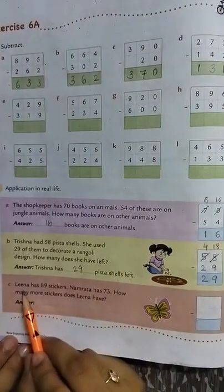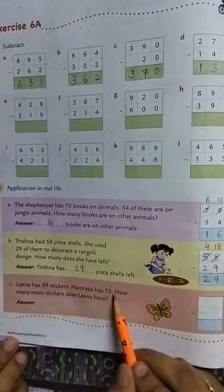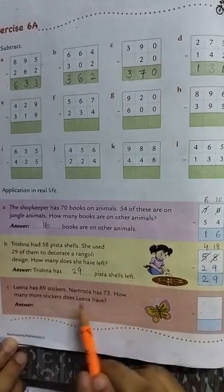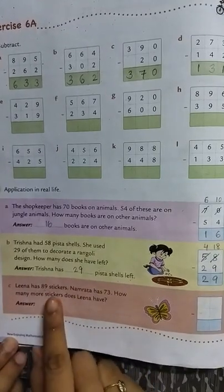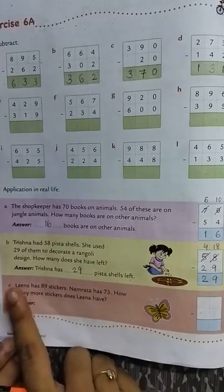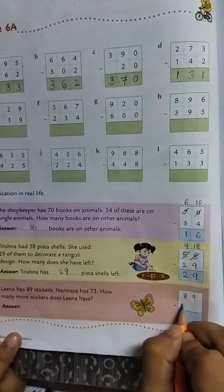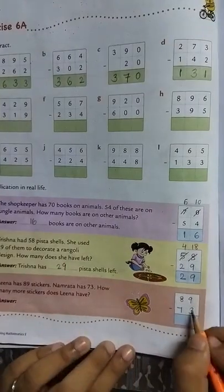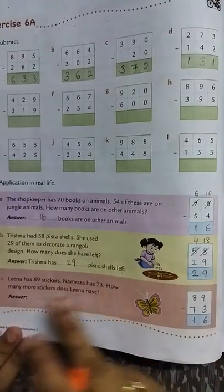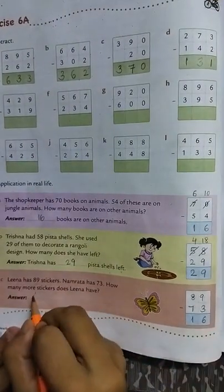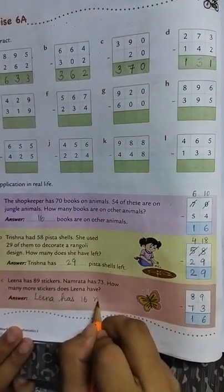Next question: Leena has 79 stickers, Namrata has 73. How many more stickers does Leena have? Leena ke paas Namrata ke comparison mein kitne zyada stickers hai? We have to compare. So we will subtract. We have to find out how many more stickers Leena have. So pehle hum 89 likhenge, 89 is the bigger number. Then we will write 73 and we will subtract. We will start from the one's place. 9 minus 3 is 6. 8 minus 7 is 1. The answer is 16. So Leena has 16 more stickers.